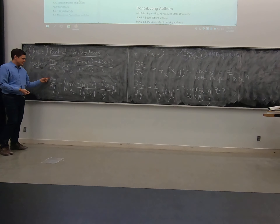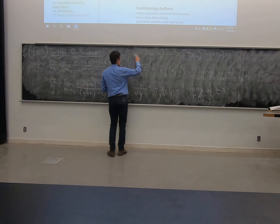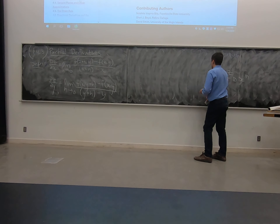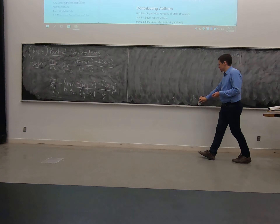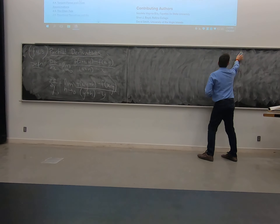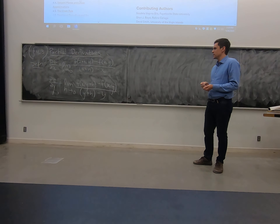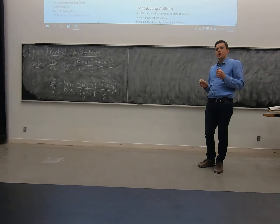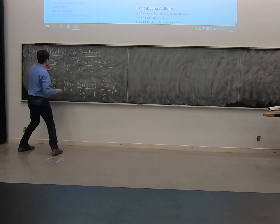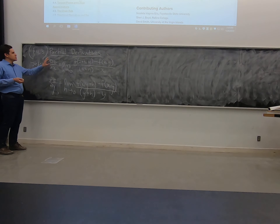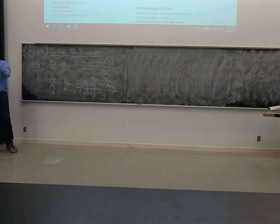When we do dz/dy, we're only thinking of the change in the y variable. So these partial derivatives, we call them partial because each one encodes part of f. This encodes the x behavior, this encodes the y behavior. So we call them partial because each one has part of the information.